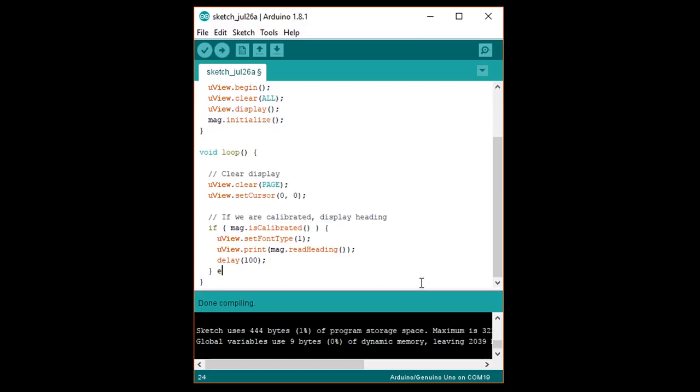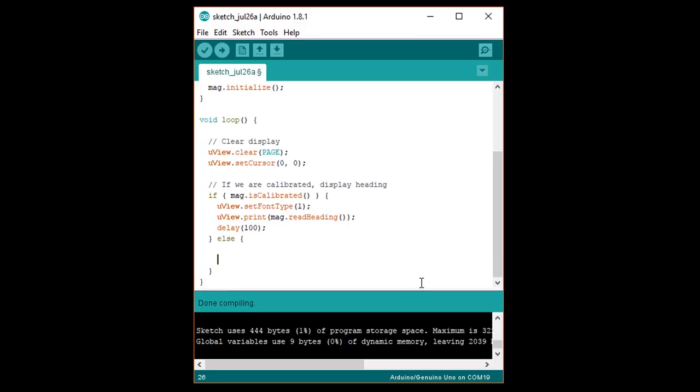Write close curly brace else open curly brace. Now if we're not calibrated, we have the MAG-3110 Arduino library record the surroundings for the next 5 to 10 seconds to figure out where north is. To do this, we call mag dot calibrate regularly while physically rotating the board. We do this because there are likely magnetic fields around us that change the readings from the sensor, and we need to figure out where north is.